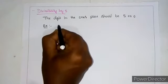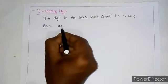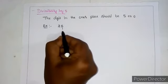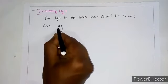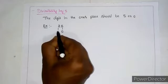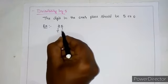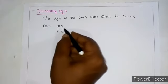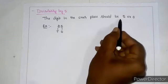For example, if you take 25. In 1's place, 5 is there, and in 10's place, 2 is there. This number is divisible by 5 because in 1's place, 5 is there.